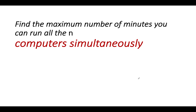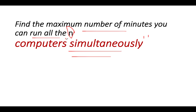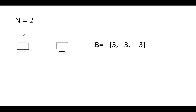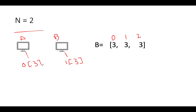We need to return the maximum number of minutes you can run all N computers simultaneously — the keyword is 'simultaneously.' We are given two computers A and B with three batteries (indices 0, 1, 2). In the first go, we hook battery 0 to A and battery 1 to B and consume both for two minutes. The remaining battery state becomes 1, 1, 3.